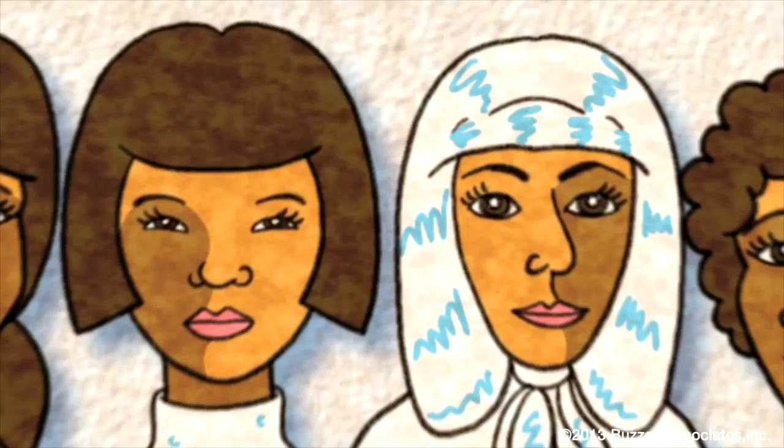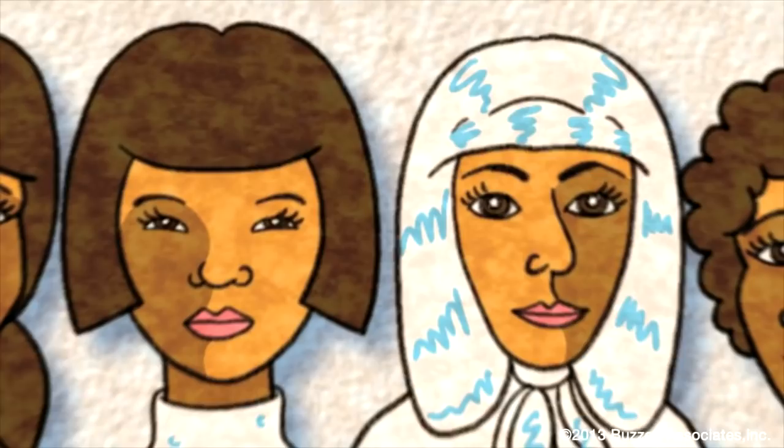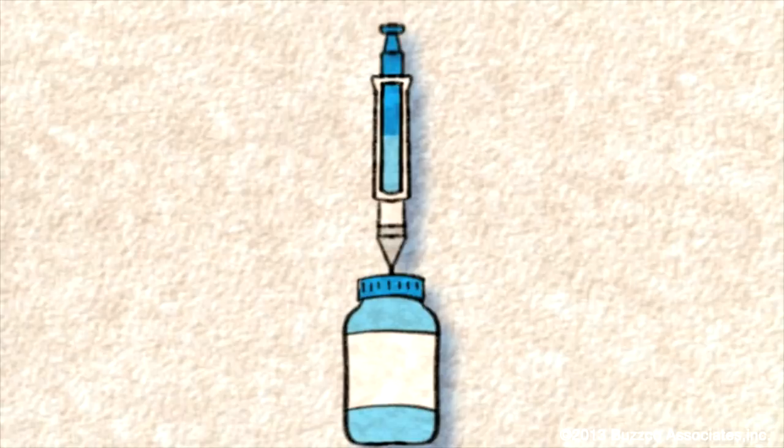Each dose of the injection contains 150 mg of Depo, which is slowly released over three months into the blood from the injection site.